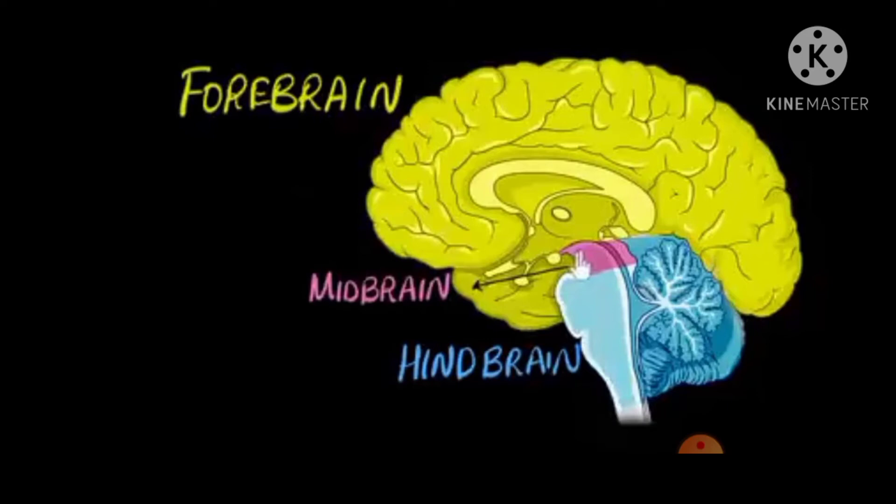The forebrain is related to voluntary actions of our body, whereas the midbrain and hindbrain are related to involuntary actions of our body.